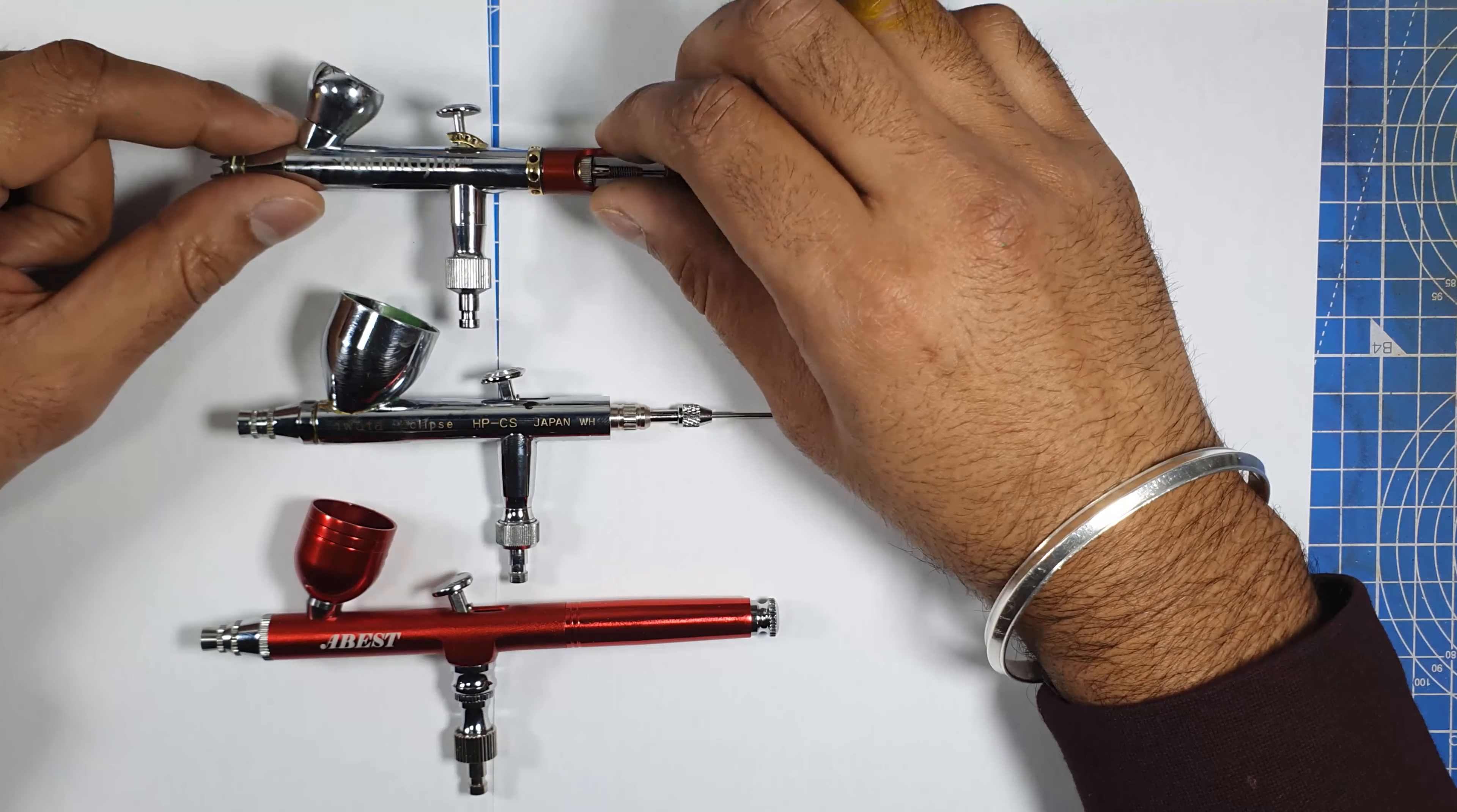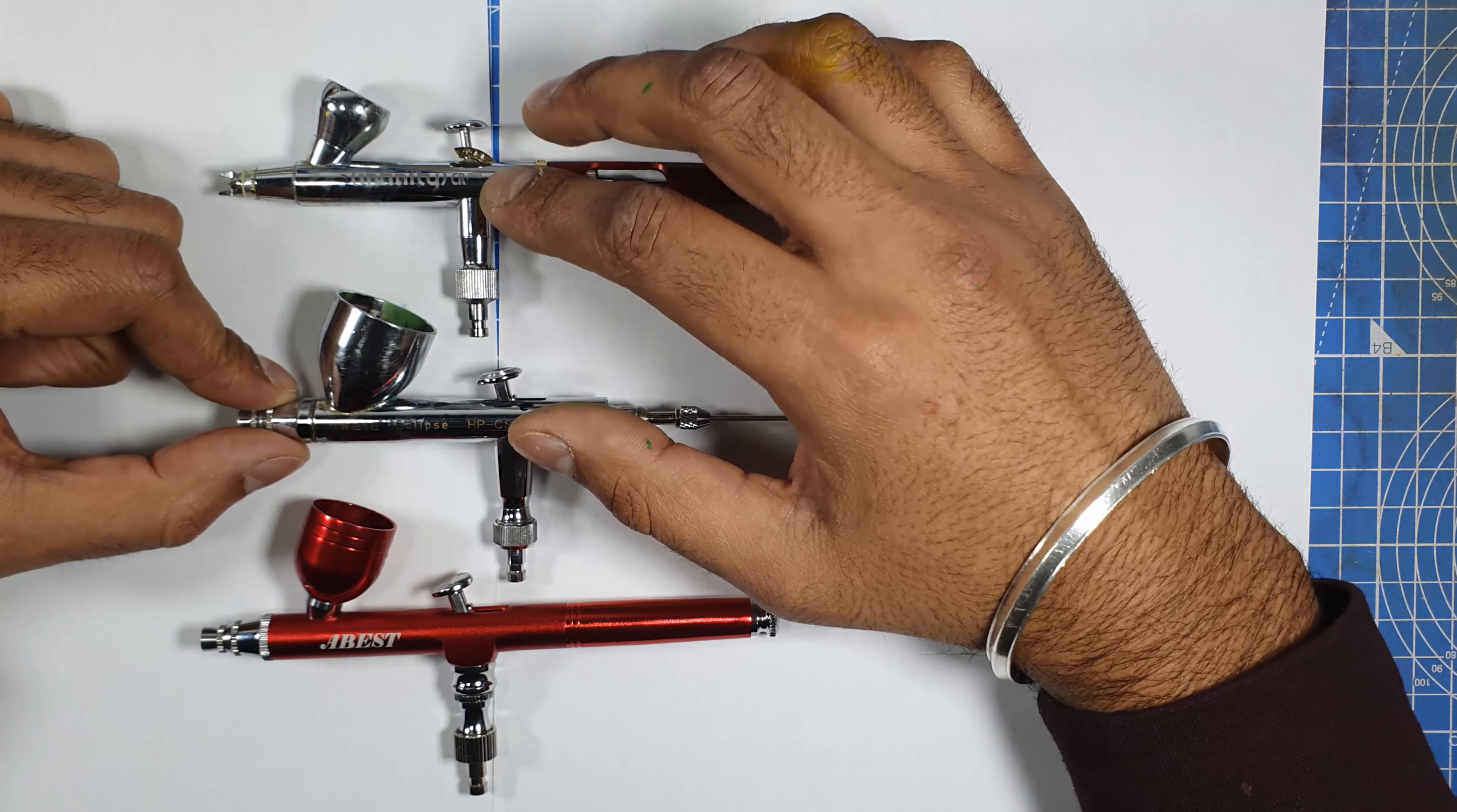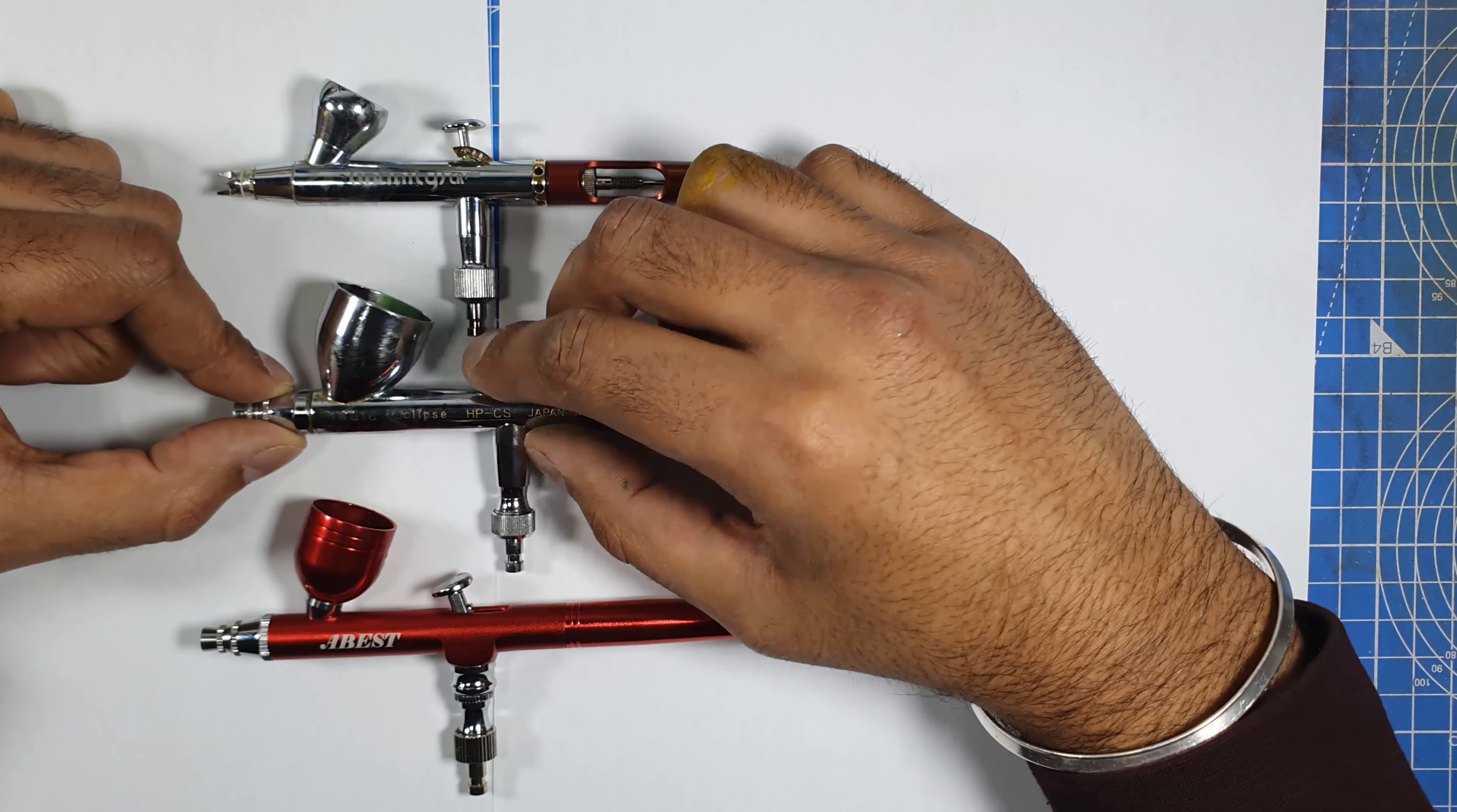The ones I use are the Infinity C Plus and the HP CS Iwata Eclipse. Now these two are quite dear. This one is about £200, so I think it's around $230, and this is about £170.